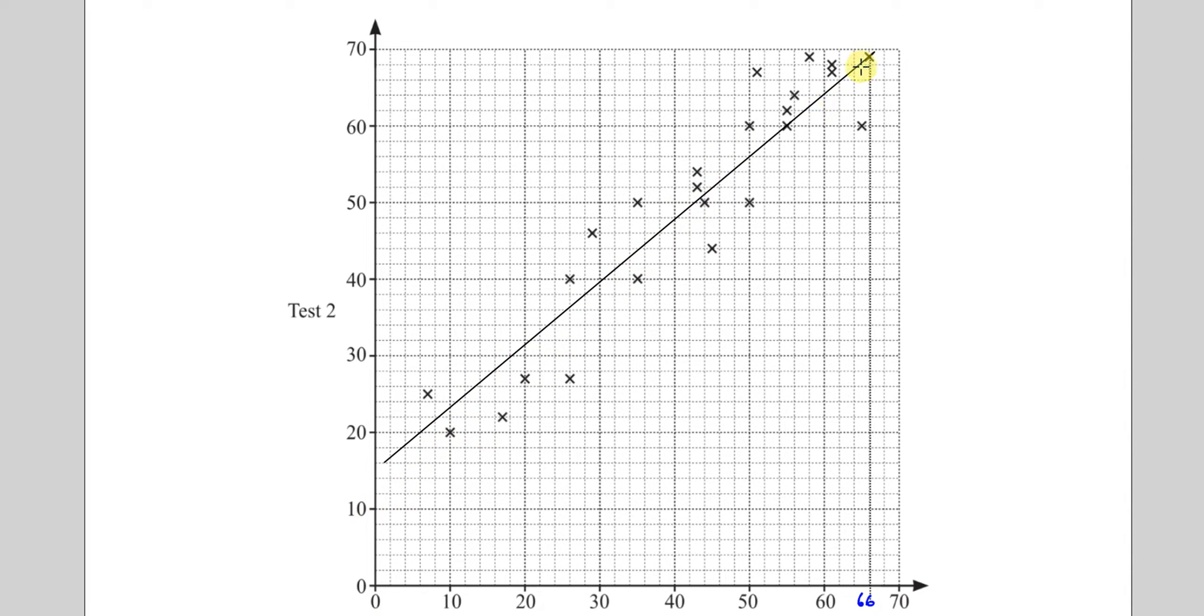It's following the slope of these points, and there's roughly the same number of crosses above and below this line. So something like this would be a suitable kind of line of best fit. There's roughly the same number above and below, and we're following the general trend of the gradient of these points. Drawing a line like this would be completely wrong.